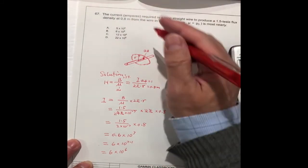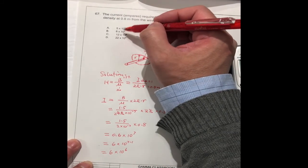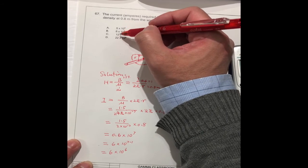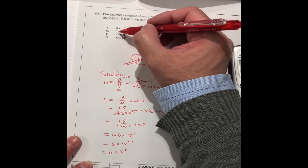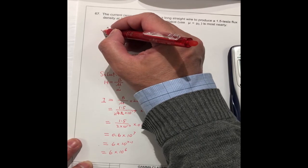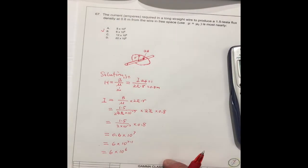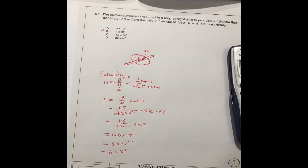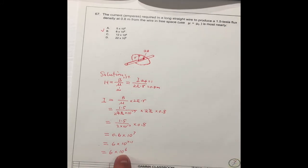So the current should be B, right? It should be 6. B. The correct answer should be B, 6 times 10^6.